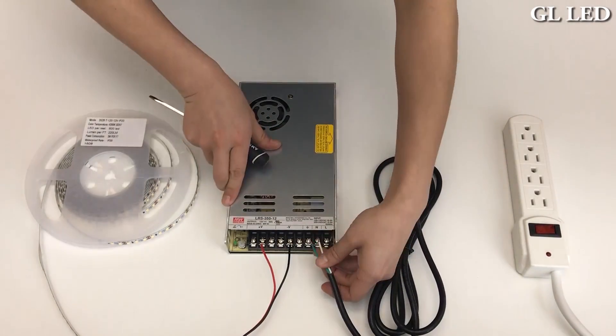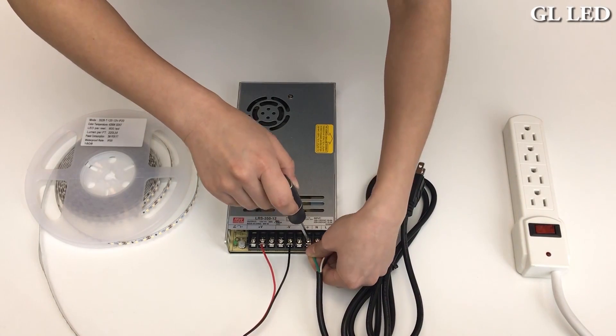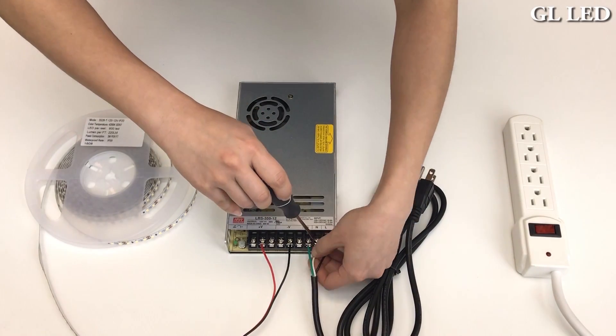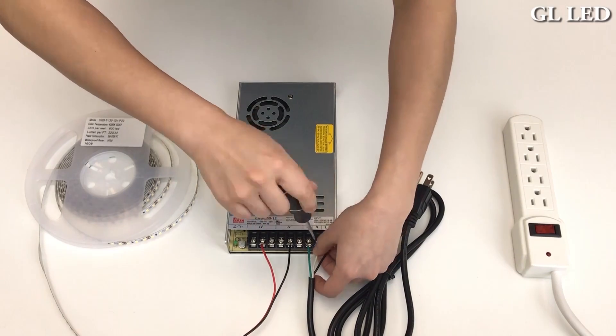Next, connect in your input section your AC cord. Your green wire is your ground wire. The white wire is your neutral wire. Then lastly, the black wire is your line wire.